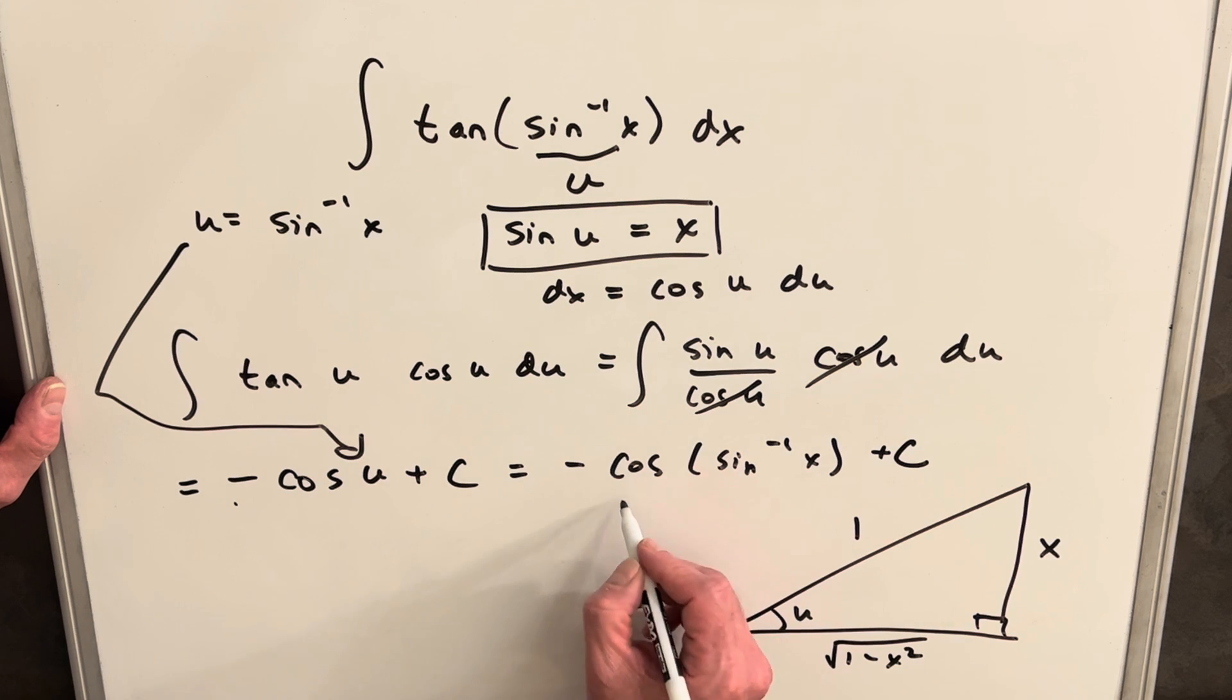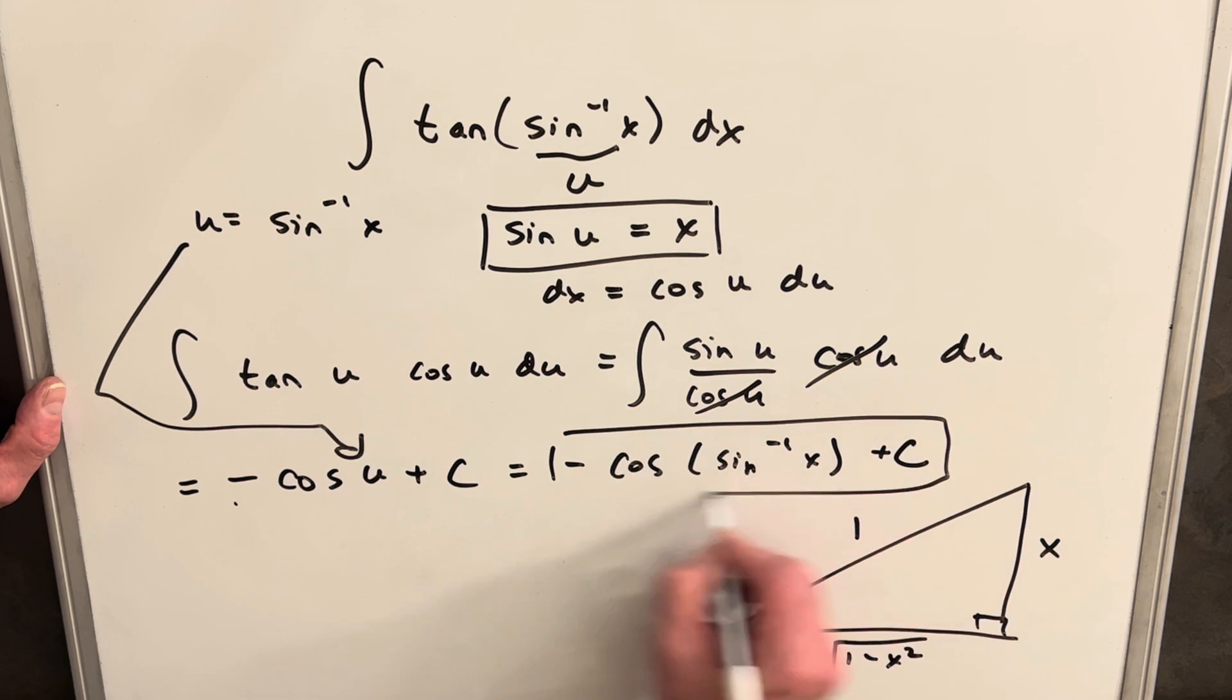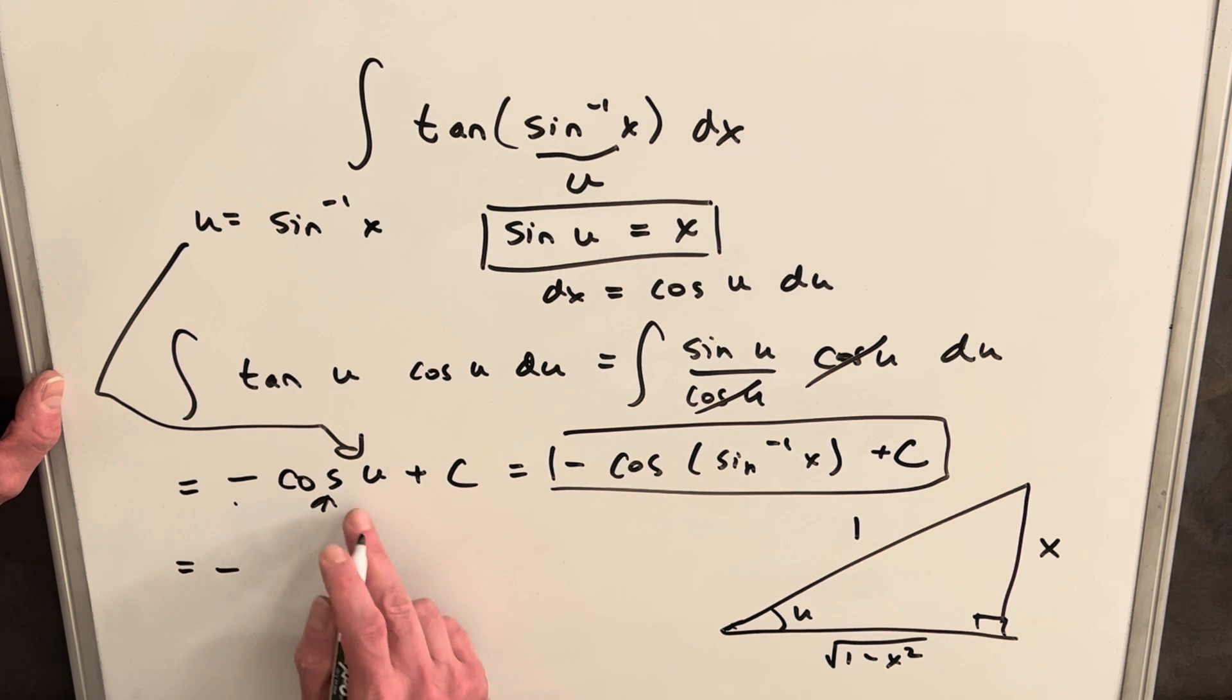Then if we go back, this is a fine answer, but we're going back to here. We have an angle u and we want to find the cosine. So cosine of u is going to be adjacent over hypotenuse. So this cosine u is going to be just the square root of 1 minus x squared.